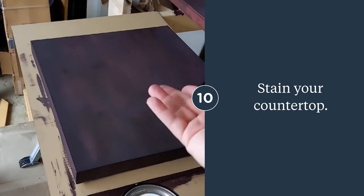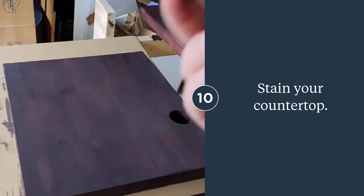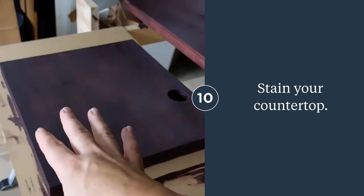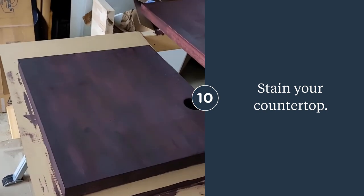Once that dries, flip it, stain the top, and then do multiple layers of polyurethane, sanding between each layer for the top. The top needs more polyurethane because it's getting more exposure to children and things on it.